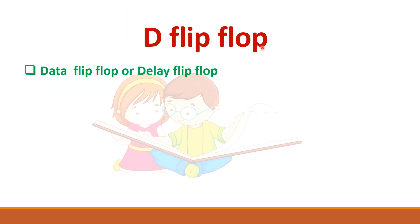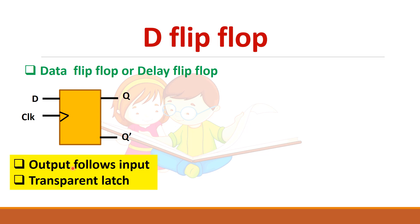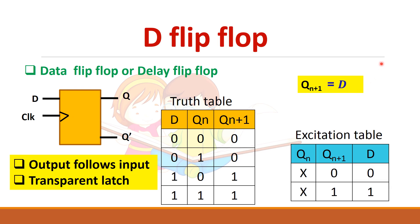To summarize D flip-flop: it is also called data flip-flop or delay flip-flop. It has only one input. The output follows the input and it is also called a transparent latch. When D is 0, the next state is always 0; when D is 1, the next state is 1. The characteristic equation is Qn+1 = D. The excitation table has been shown as well.